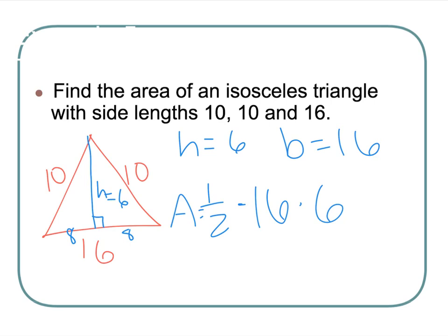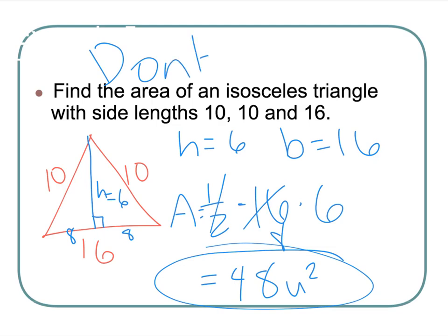Area equals one half times my base of 16 times my height of 6. Since I'm doing this without a calculator, I'm just going to cut this down to 8, so 8 times 6 is 48 units squared. I just gave you the secret to this class - just don't forget anything. Write that down: don't forget stuff.